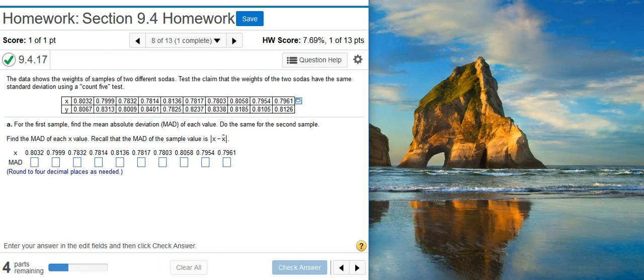Here's our problem statement. The data show the weights of samples of two different sodas. Test the claim that the weights of the two sodas have the same standard deviation using a Count Five test. Part A says, for the first sample, find the Mean Absolute Deviation, or MAD, of each value. Do the same for the second sample.